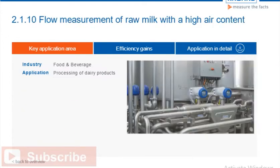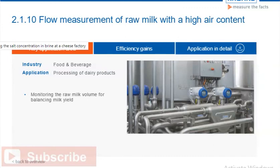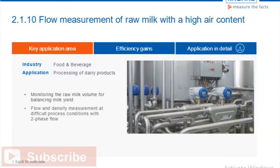In the production of fresh and long-life dairy products, the volume of raw milk and the milk yield are monitored using a Coriolis mass flow meter. Thanks to Entrained Gas Management (EGM), the flow meter allows for a continuous measurement of mass, volume flow, and density, even at difficult process conditions with two-phase flow.